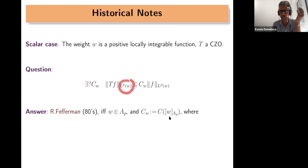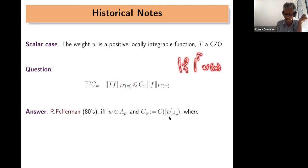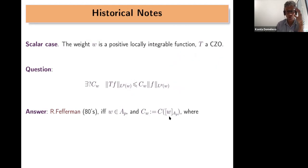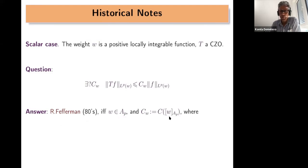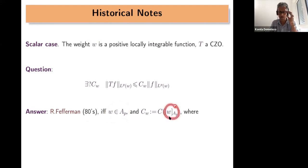In particular, for a given weight — the function we use to integrate the LP norm — we want to know under which conditions on the weight there exists a constant depending on the weight such that this operator is bounded. This has applications to PDE and is interesting in its own right. This question was answered by Robert Fefferman in the 80s in a series of very important works.